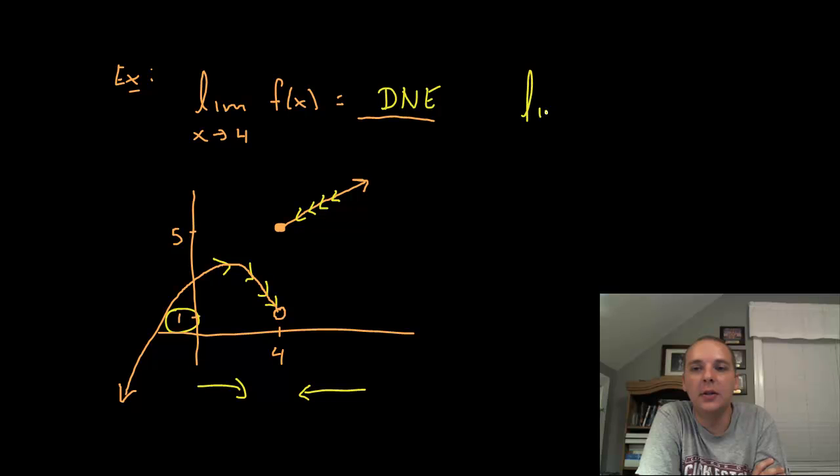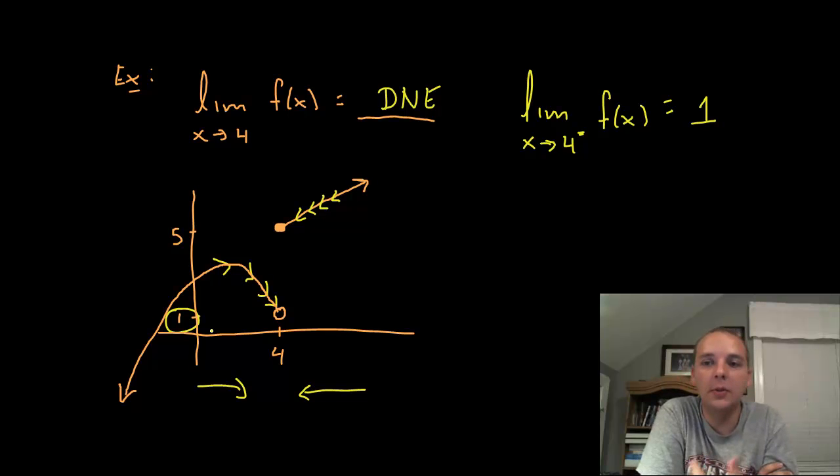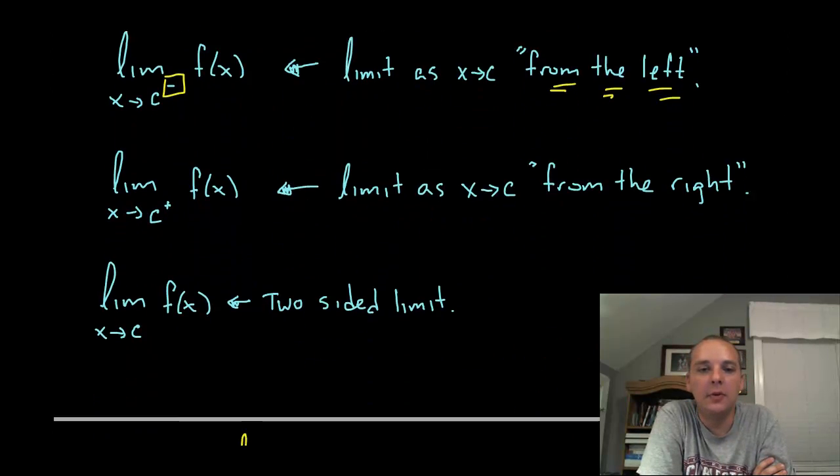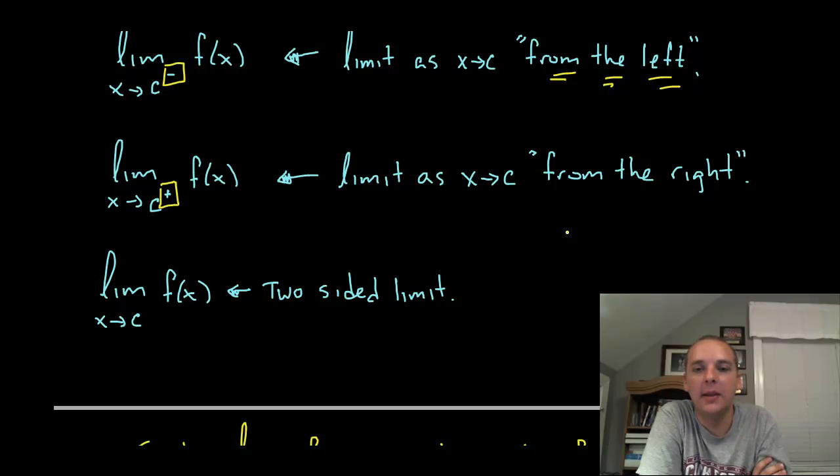So even though this limit does not exist, if we took the limit as x approaches 4 with a little minus sign for f(x), well that limit would definitely be defined and the answer would be 1. Because from the left hand side of 4 it clearly goes to 1. And the way I personally remember this is having the little minus sign makes me think of coming from the negatives, from the negative numbers which would be from the left.